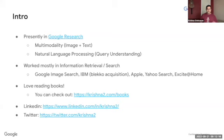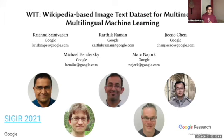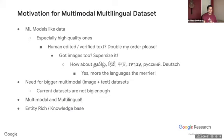For the introduction: I'm presently at Google Research. My areas of interest are natural language processing and information retrieval, and on the other hand, multimodality — specifically using images and text. Prior to this, I've had information retrieval experiences at various companies. My hobby is reading books. This work would not be possible without my wonderful colleagues, and I'd like to acknowledge my co-authors: Karthik Rahman, Jekav Chen, Michael Bendersky, and Mark New York, along with whom we published this paper to the SIGIR conference last year, where it got accepted. As part of the paper, we also released this dataset.